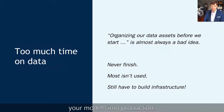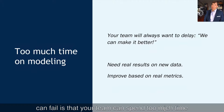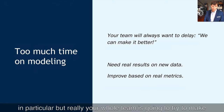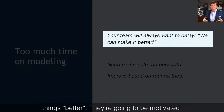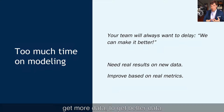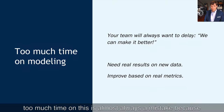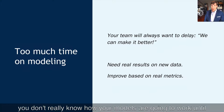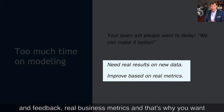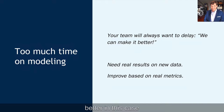The third reason machine learning can fail is that your team spends too much time on modeling. Your data scientists — and really your whole team — will want to get more data, better data, a better model, and train it longer before going to production. But spending too much time on this is almost always a mistake, because you don't really know how your model is going to work until you actually go live, have users using it, and get real feedback and business metrics. Better is the enemy of good enough — and that is particularly true here.